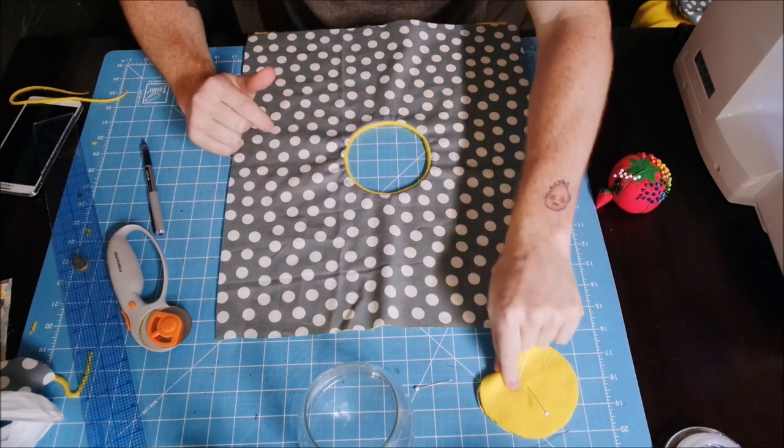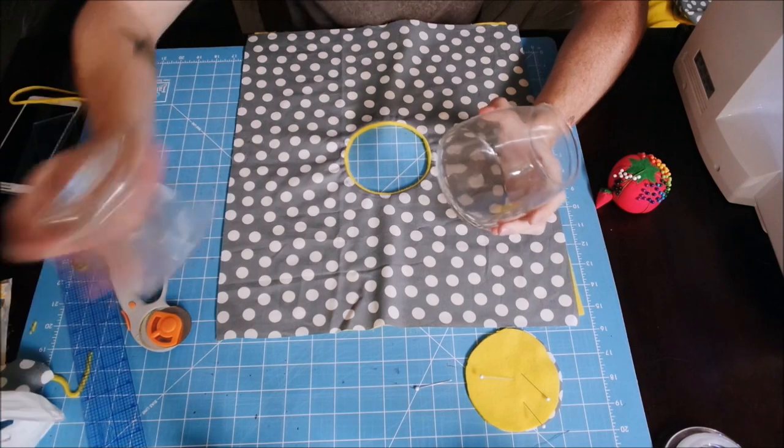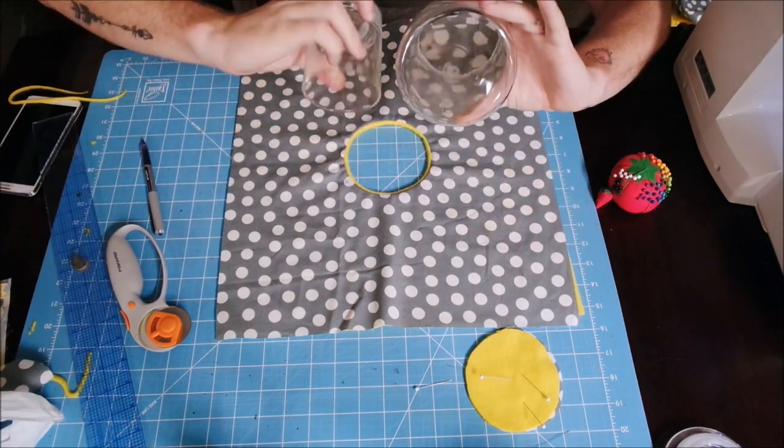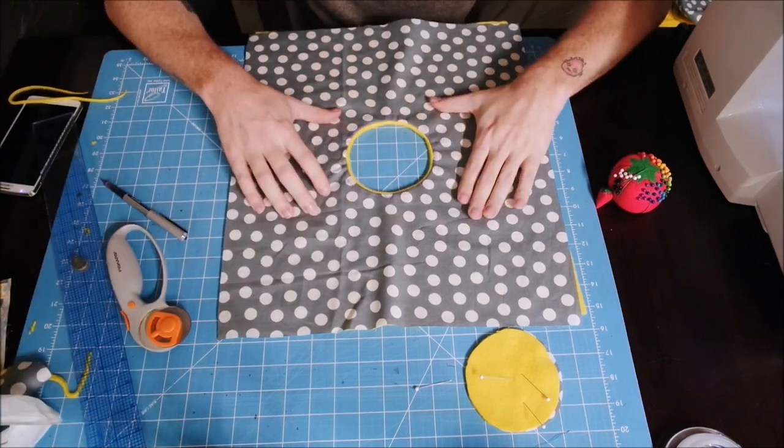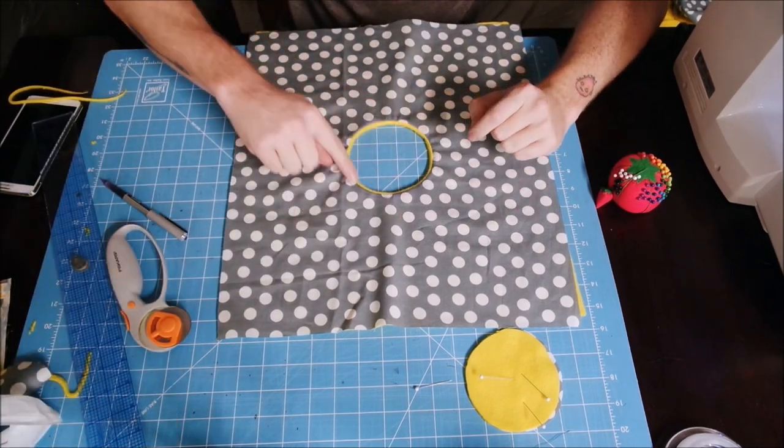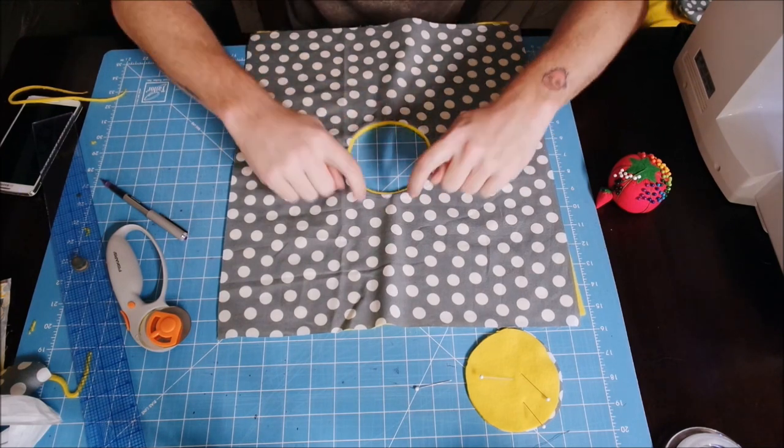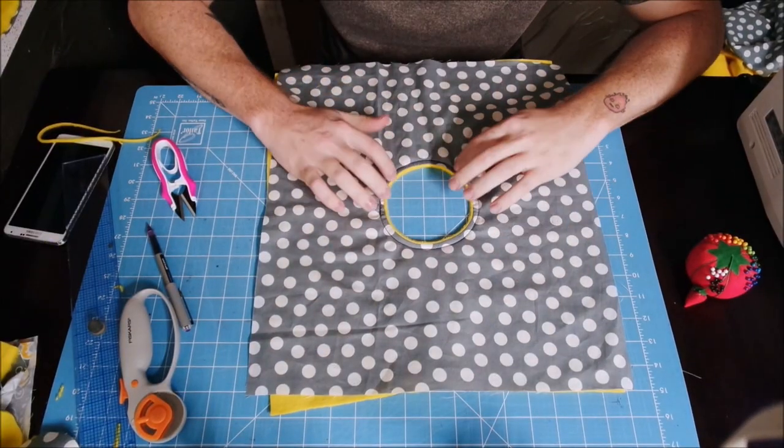Okay, so I went ahead and sewed, cut it out, flipped it inside out. Here's my piece that I cut out, and I actually switched. I didn't feel like this cup was gonna be a big enough opening, so I went with this jar that we have. So now I'm going to go ahead and iron the circle flat so that it stays nice and tight while I'm sewing, and I'm going to go ahead and pin it.